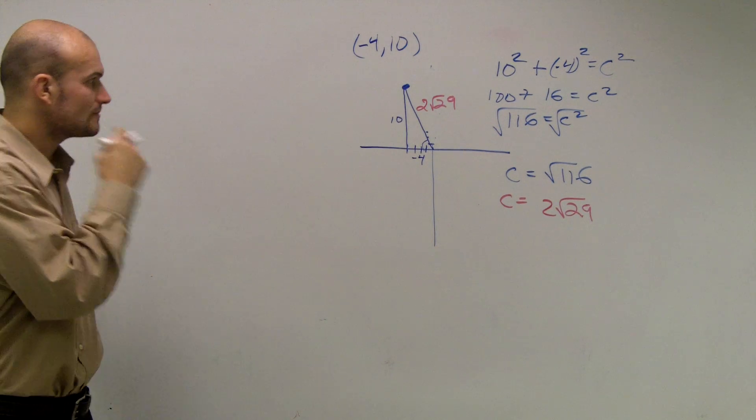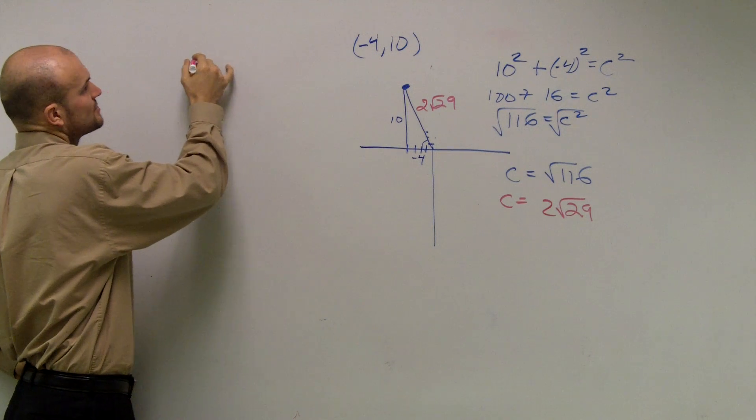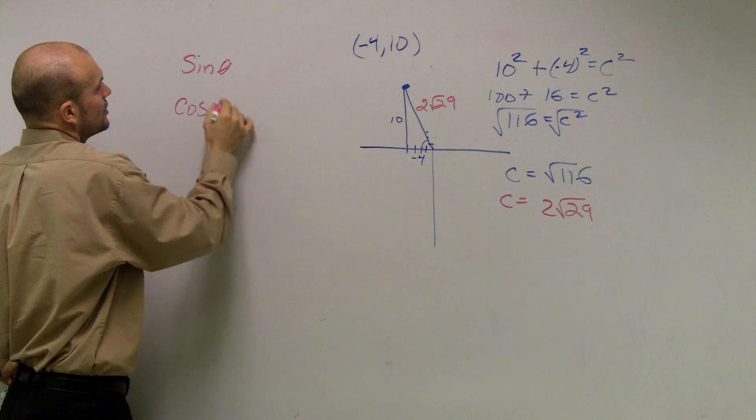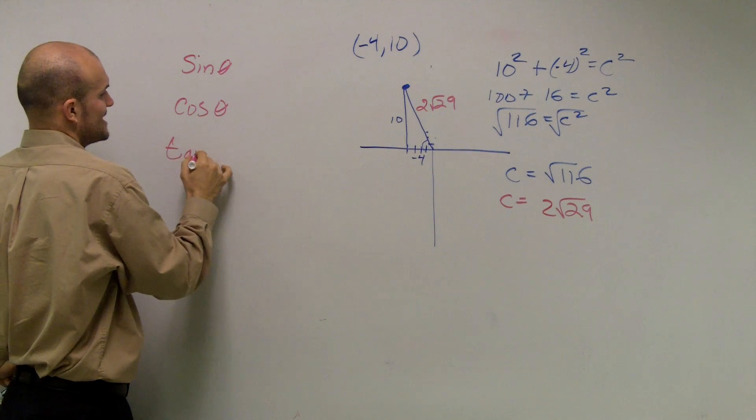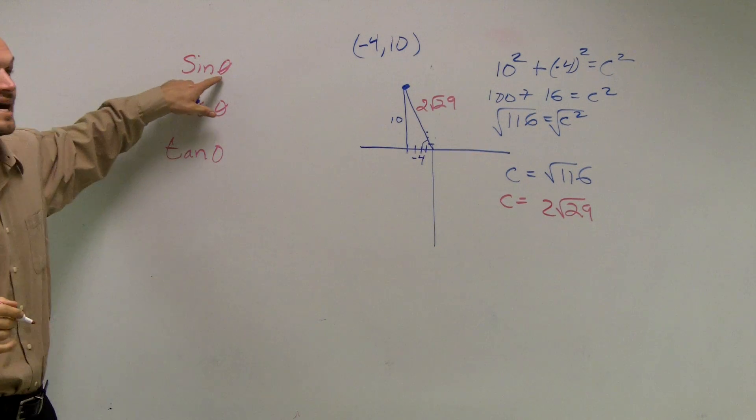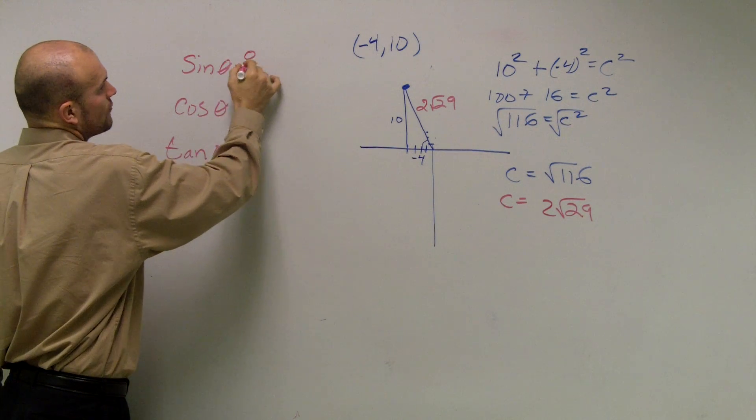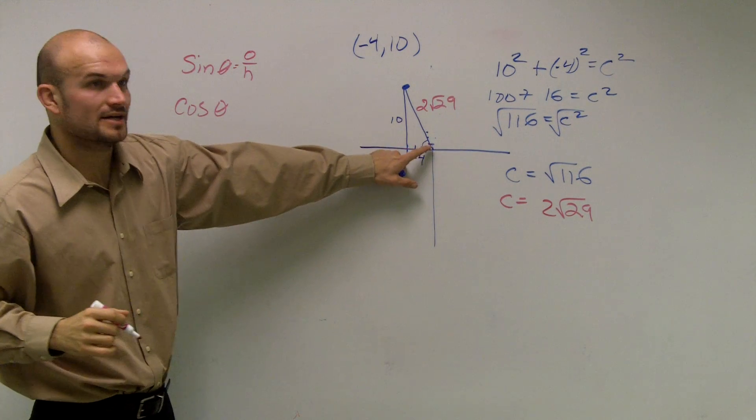Now they want us to find all of our values. So we need to do sine of theta, cosine of theta, and tangent of theta. So the sine of theta, if you guys remember, is going to be opposite over hypotenuse. Well, if here's my theta,